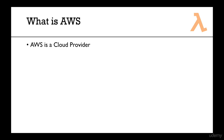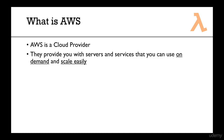So what is AWS? AWS is what's called a cloud provider. Basically they provide you with servers and services and you can use them on demand, so whenever you want, and you can really scale easily. If you want a new server, it takes you two minutes. If you want 1,000 servers, it also will take you two minutes.